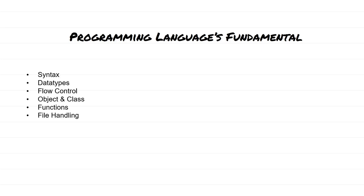Certain data types allow certain types of operations. For example, only two numeric numbers can be added. If you try to multiply one string with another string, that is the type of operation which cannot be performed — just as in the real world. However, if you have two numeric numbers and want to multiply two by three, you get six. Both of those data are numeric data types. So using data types, we define the type of data.